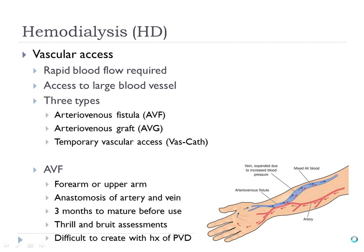There are also AVFs and AVGs — arteriovenous fistulas and grafts. A fistula means an opening between two things that normally don't have an opening. This fistula is created usually in the lower upper arm so that it mixes the venous and arterial systems at that point.